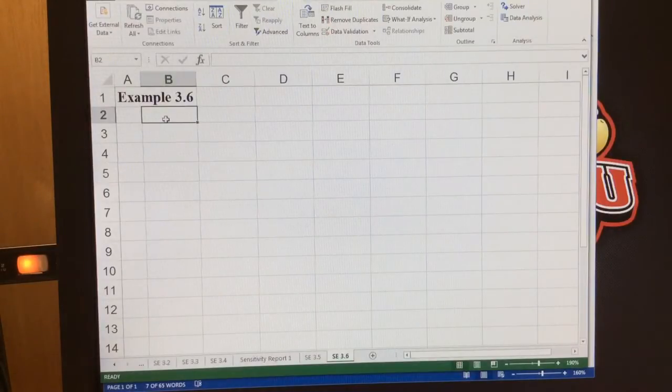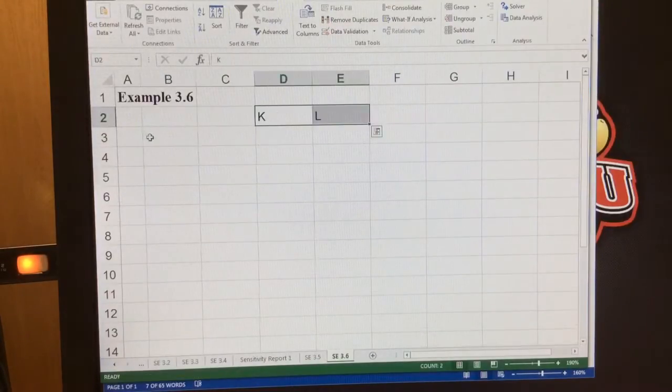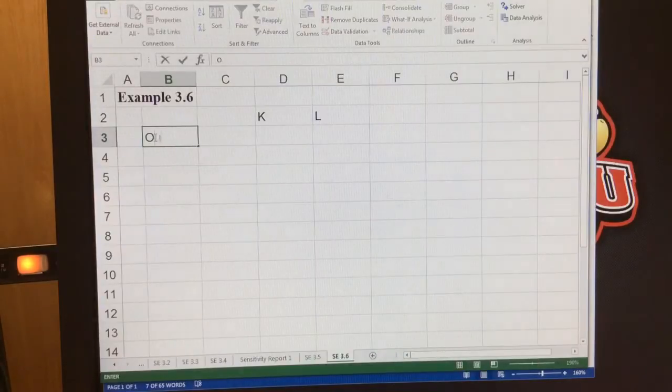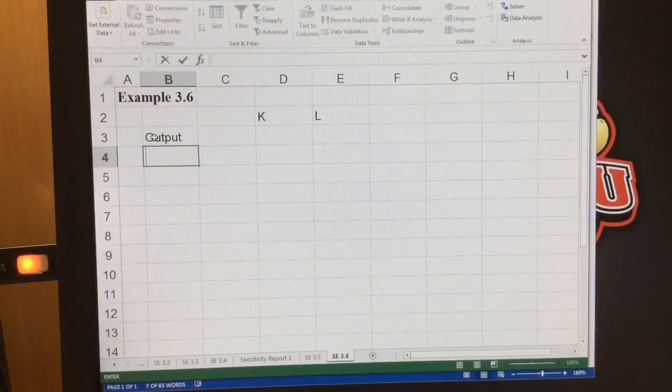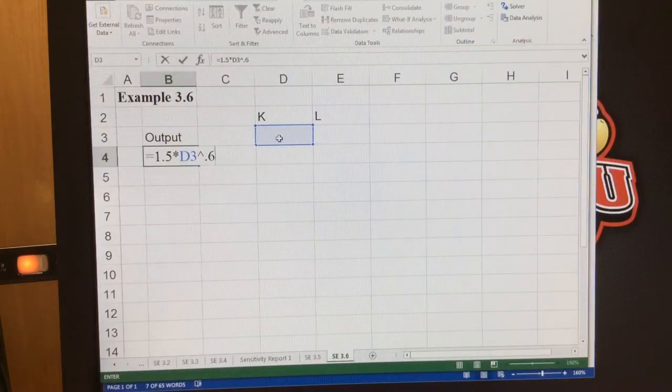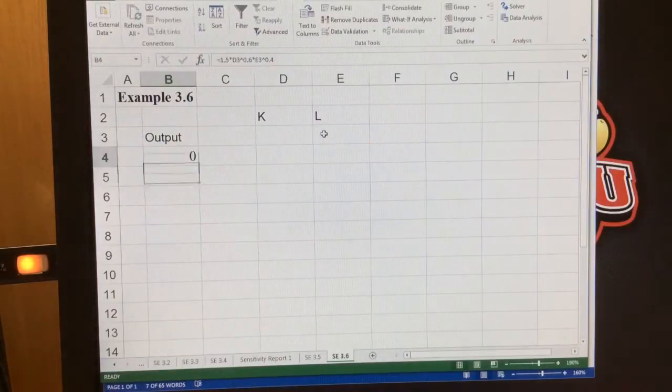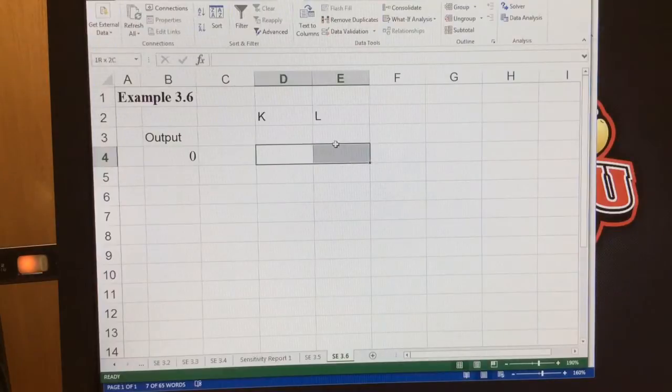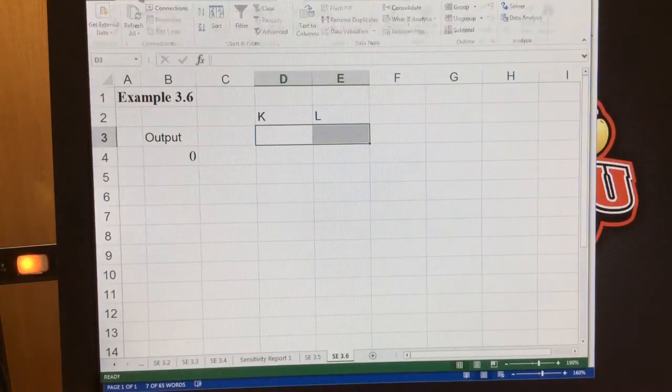So here I'm going to have capital and labor. I'm actually going to slide these over just a little. And here I have my output equation. So my output equation is equal to 1.5 times capital to the 0.6 power times labor to the 0.4 power. I'm going to highlight these just to let me know those are the ones I'm choosing.